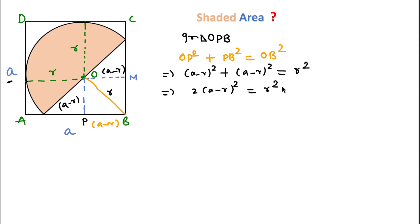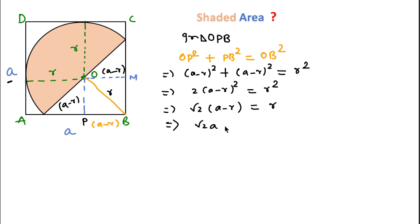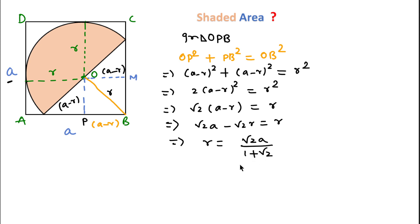Since OB equals r, we get 2(a minus r)² = r². Taking the square root of both sides: √2 · (a minus r) = r, so √2·a minus √2·r = r. Rearranging gives r(1 + √2) = √2·a, and therefore r = √2·a / (1 + √2). This is the required formula for the radius of the inscribed semicircle.